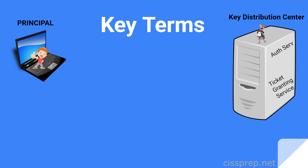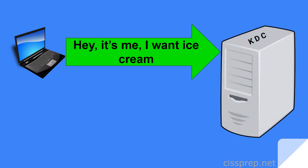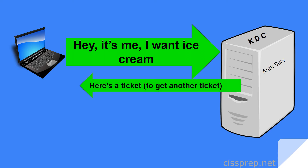The way it works is like this. The user, or principal, authenticates to the key distribution center, or KDC, providing its password. The authentication service then generates something called a ticket-granting ticket, which is basically permission to get a different ticket to eventually get access to the destination server. The TGT, or ticket-granting ticket, is shared to the user and the ticket-granting service.